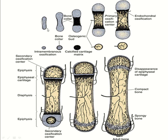At first, a cartilaginous model is formed. The center of the cartilaginous model is converted into bone, and this area is known as the primary ossification center, leaving two cartilaginous ends. Soon these cartilaginous ends start to convert into bone, and this area is known as the secondary ossification center — one at each end.